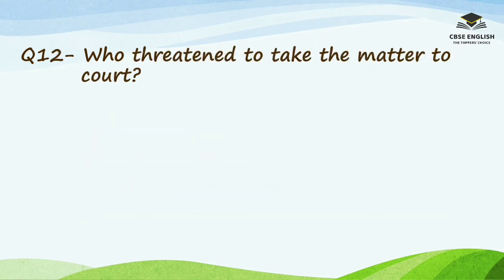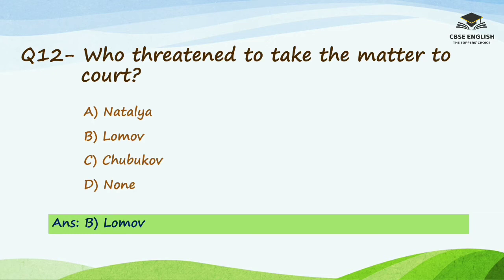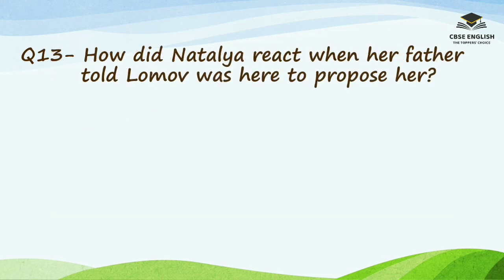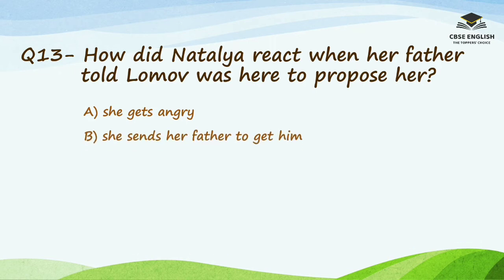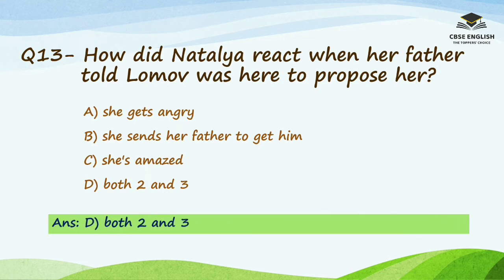Question number 12: Who threatened to take the matter to court? Options are Natalia, Lomo, Chubukov, or none. The right answer is Lomo. Question number 13: How did Natalia react when her father told her Lomo was here to propose? Options are she gets angry, she sends her father to get him, she is amazed, or both two and three. The right answer is both two and three.